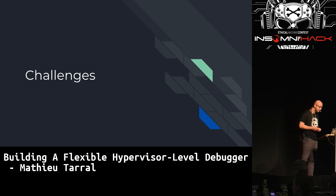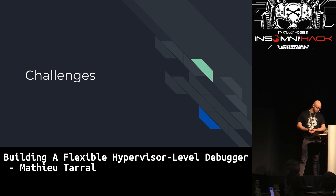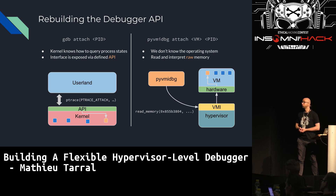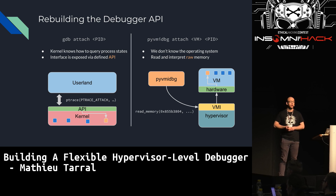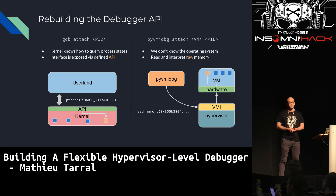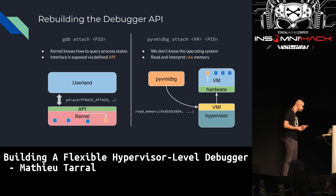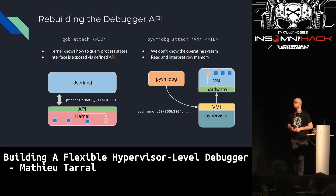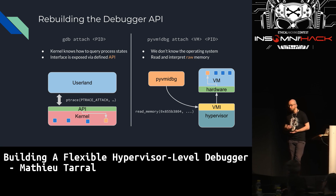If it were easy to build these debuggers, you'd be using them every day — but it's not. There are many challenges. The first is that you will need to rebuild the debugger API. Think about your normal use case when GDB attaches to a PID: you just talk to the kernel, which knows how to find the state of its own processes, threads, and context state via a clearly defined API like ptrace on Linux. With virtual machine introspection, you don't know the operating system, and you have to read and interpret raw memory structures. Your API is just 'read memory' and 'read registers' and then make sense of it.